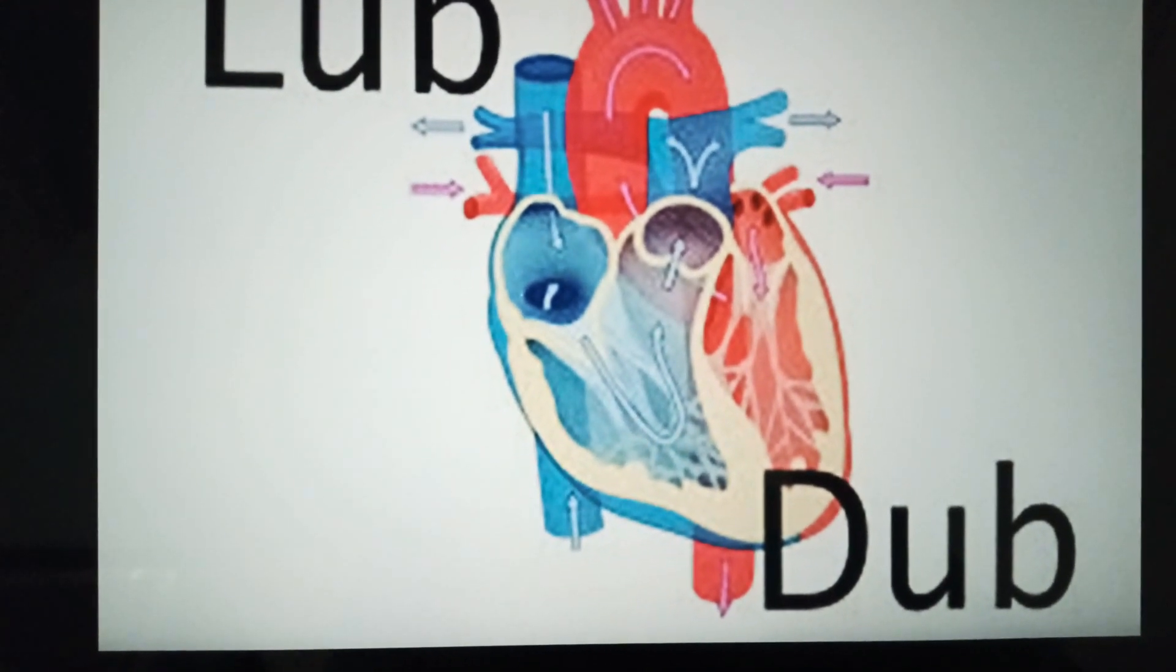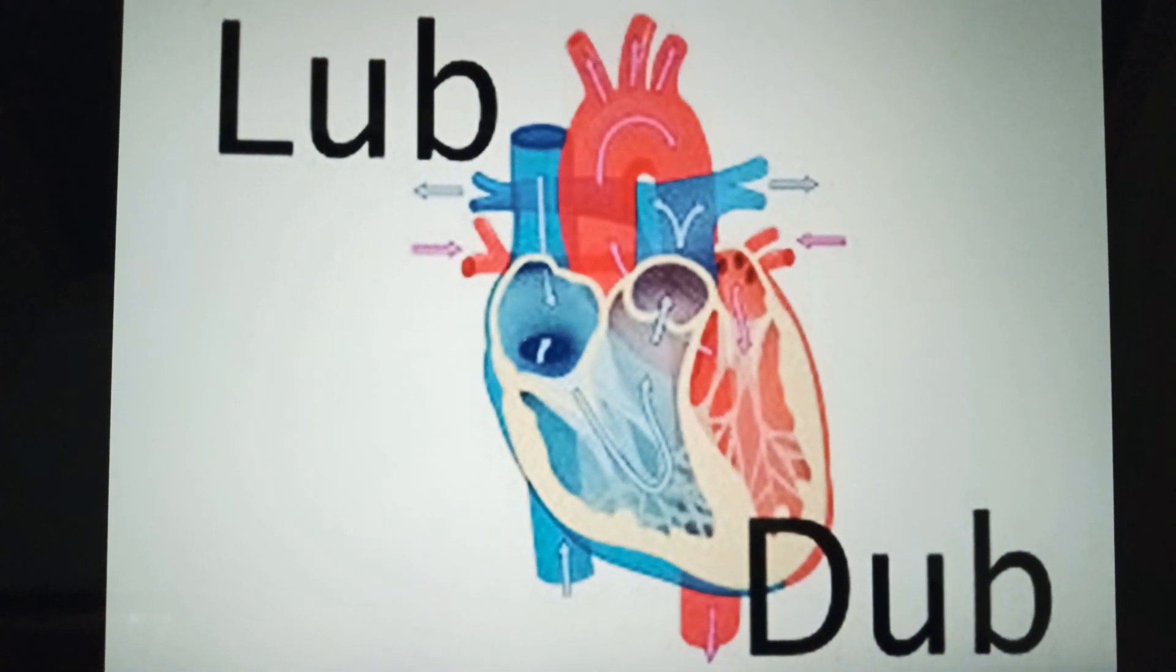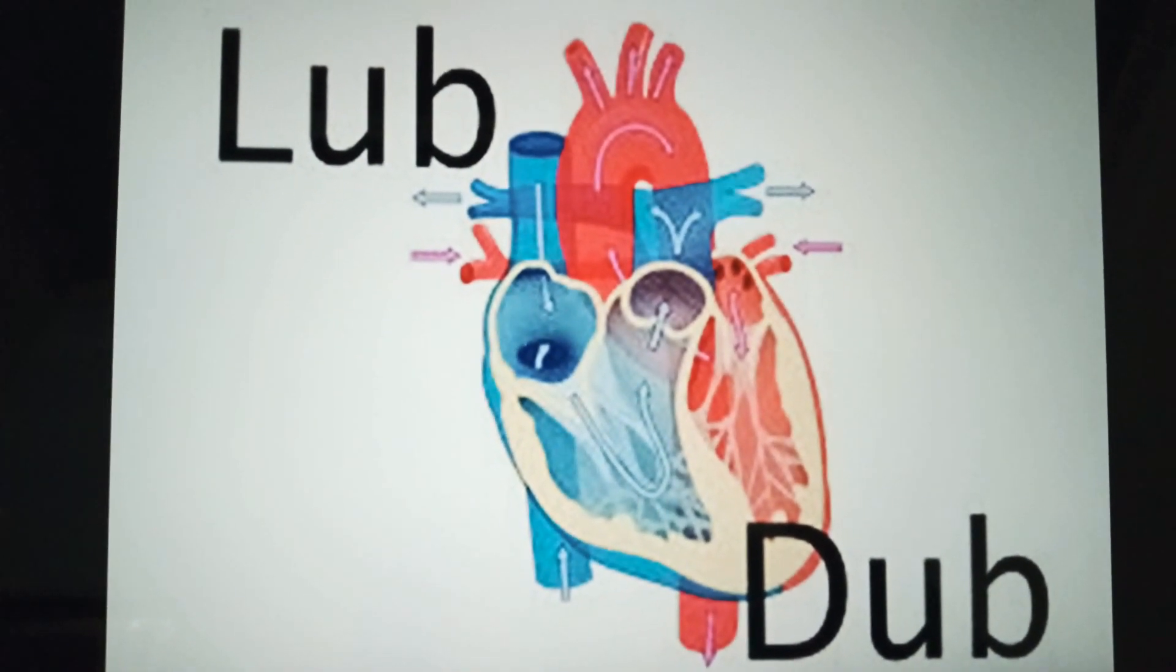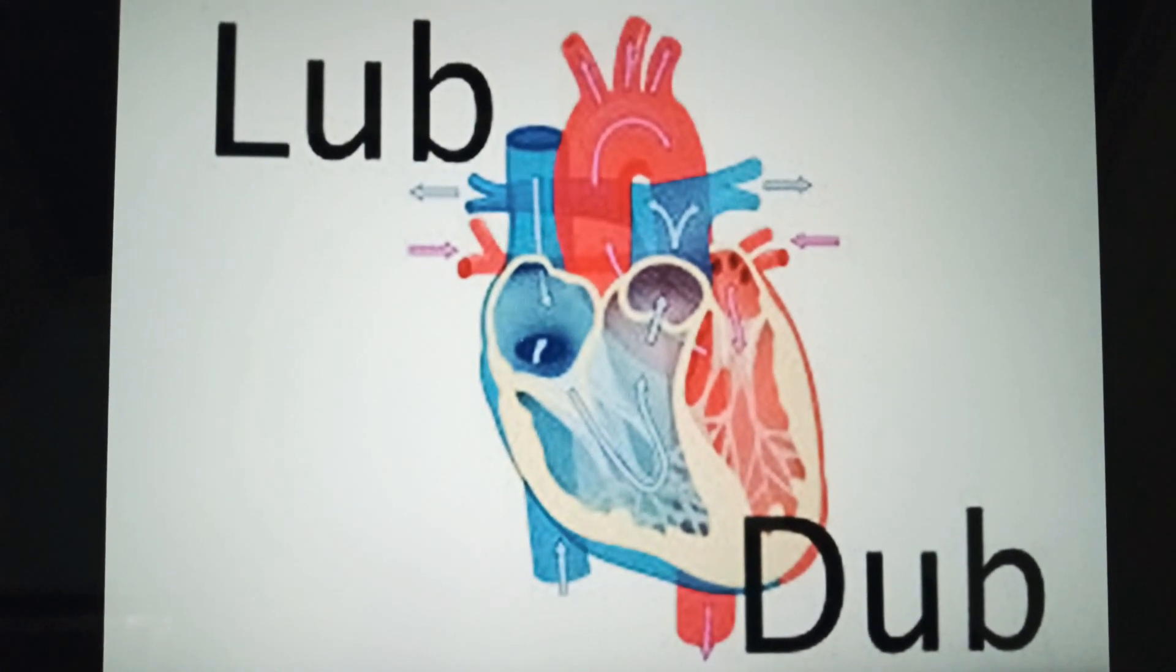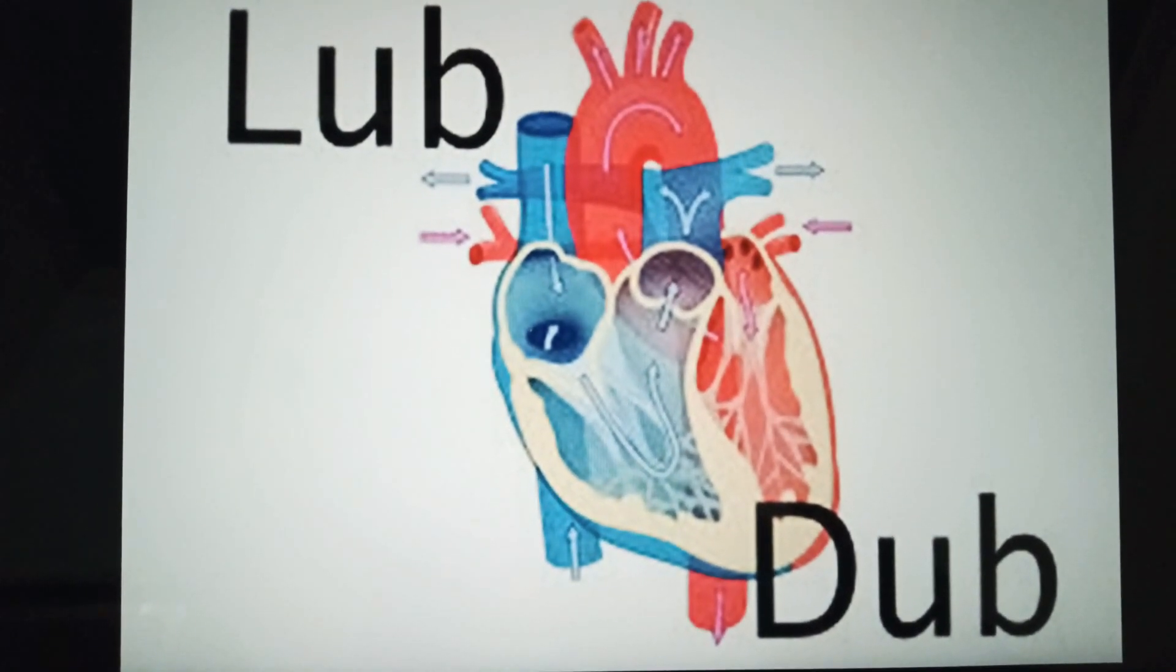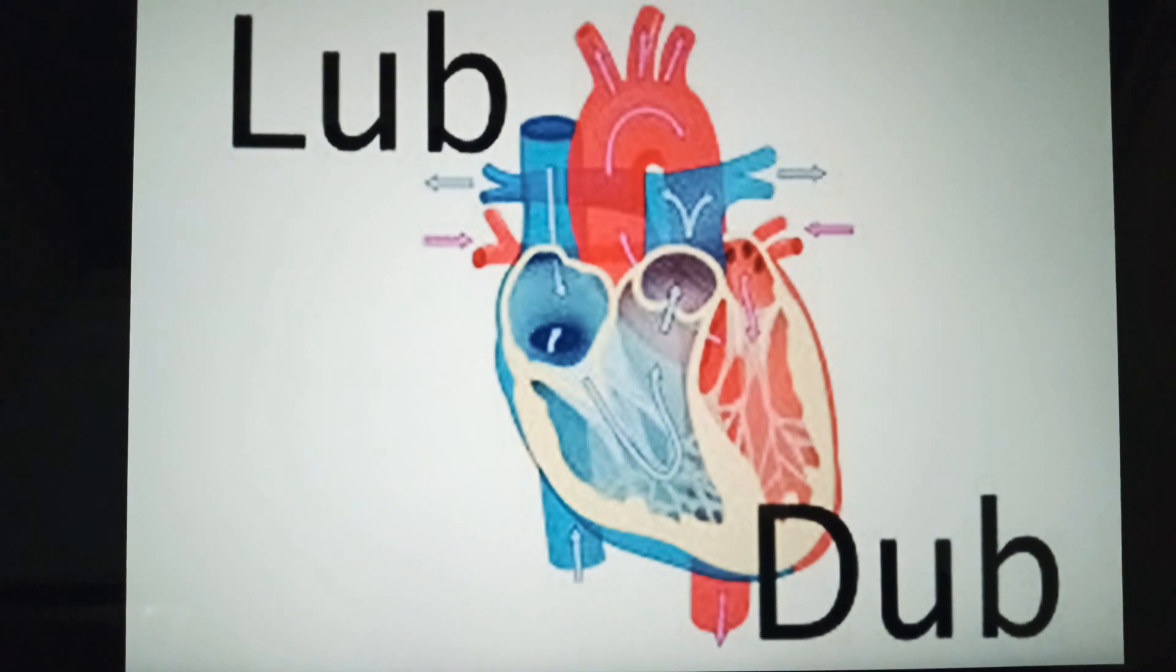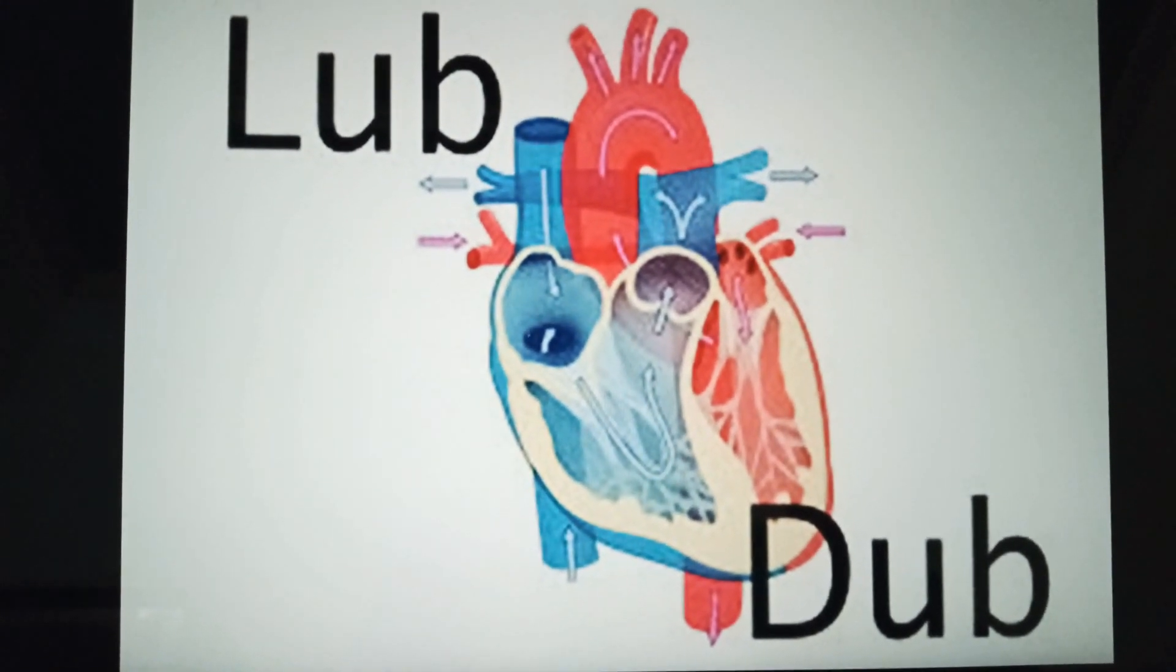The average human heart beats 70 times per minute, so it would beat approximately 2.5 billion times during a lifetime of 66 years. In normal adults, the mass of heart is 250 to 350 grams and the size is equal to a clenched fist.